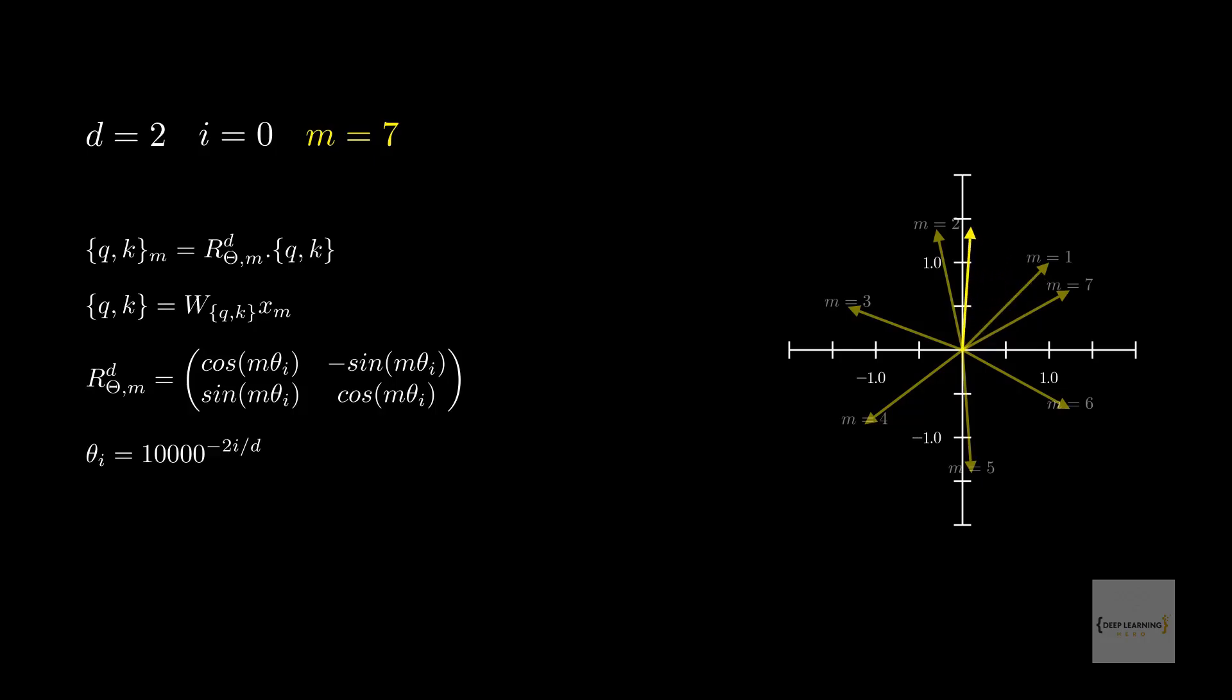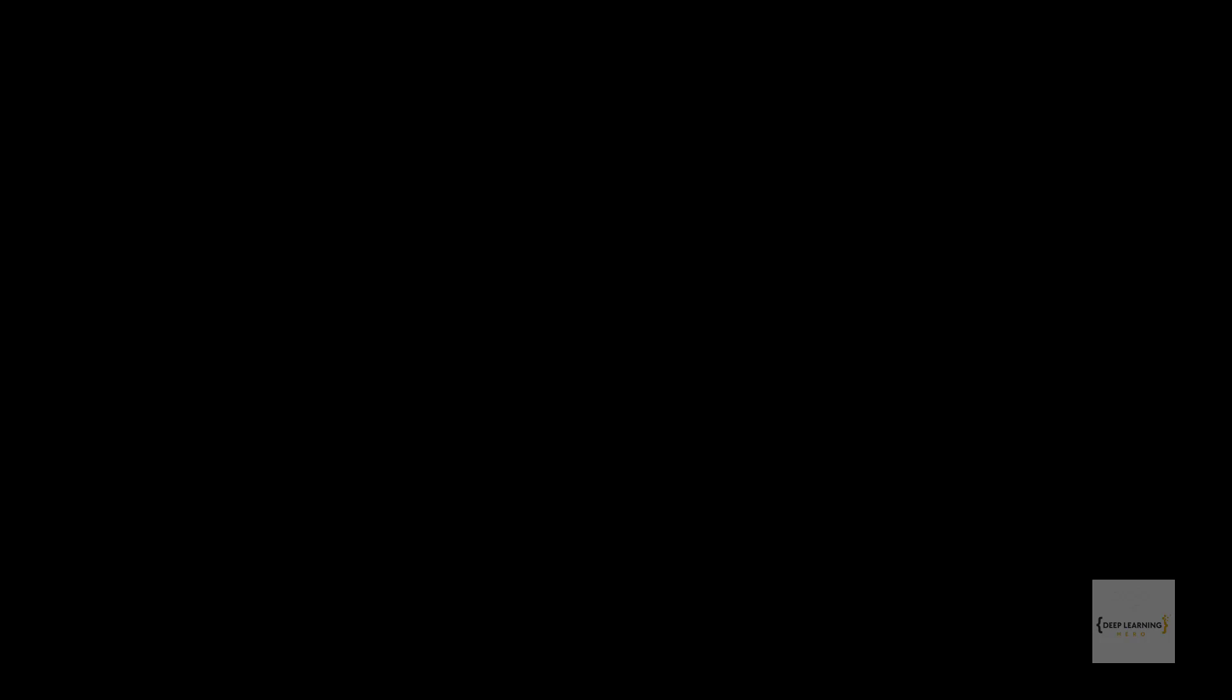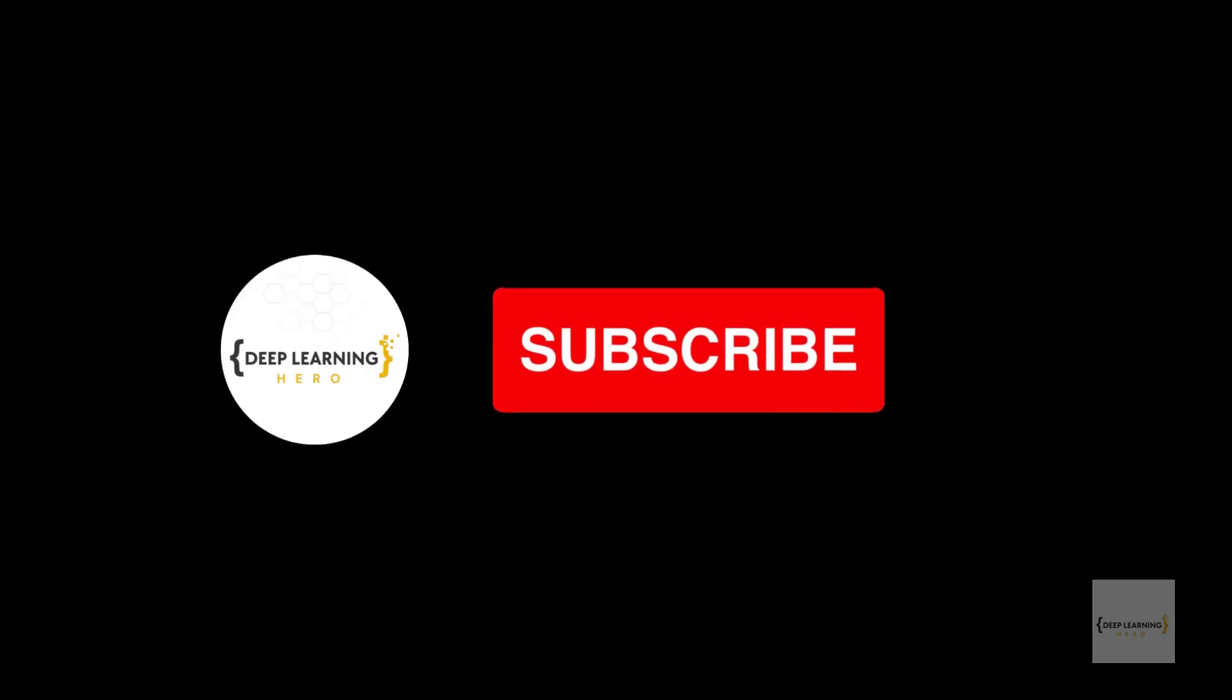Due to rope behaving in a predictable manner as the position changes, it's able to adapt much better to sequence lengths beyond training length. There's another technique called alibi, which claims to be even more superior than rope. But right now, rope is the most commoditized positional embedding for LLMs. If you enjoyed this video and like to see more videos about machine learning and large language models, subscribe to my channel, Deep Learning Hero. I will see you soon with another video.